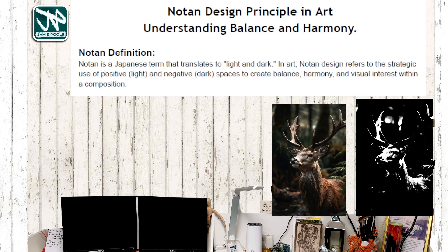We're going to go over to the walls first of all, just to remind you of some of the stuff we looked at last week, and I've also got some examples from our own art class from today to show you what other students have done. So there's the old definition of what NOTAN was. Remember it's about light and dark — it refers to the strategic use of positive light and negative dark to create balance and harmony within your picture.